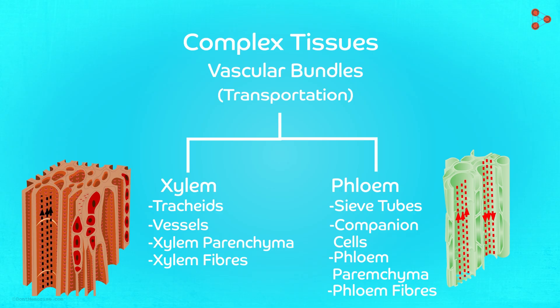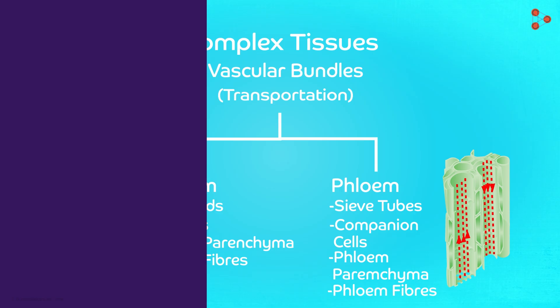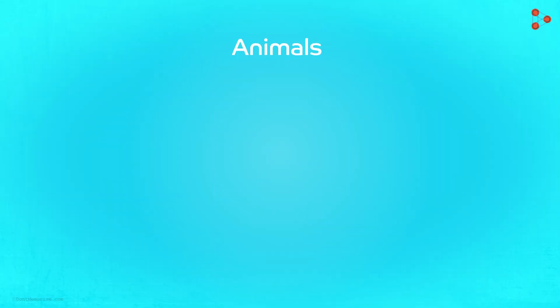Well, this was a general idea about the various tissues found in plants. Now let's have a look at the tissues found in animals. In animals, we categorize the various tissues based on their major collective function.